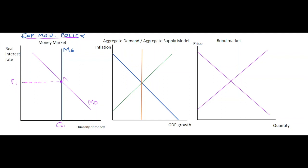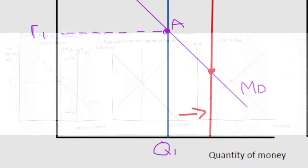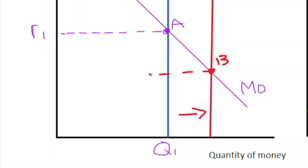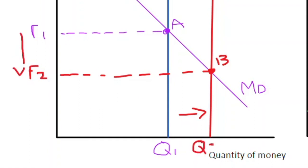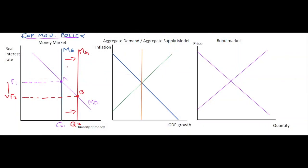Expansionary monetary policy means the central bank is going to purchase government bonds on the market. By purchasing these government bonds, they are injecting cash into the economy, increasing the money supply and increasing the amount of loans that can be issued through the banking system. Therefore we move to ms1 — an increase in the money supply — and we reach a new equilibrium point B, where the real interest rate has reduced down to r2 and the quantity of money has increased to q2.